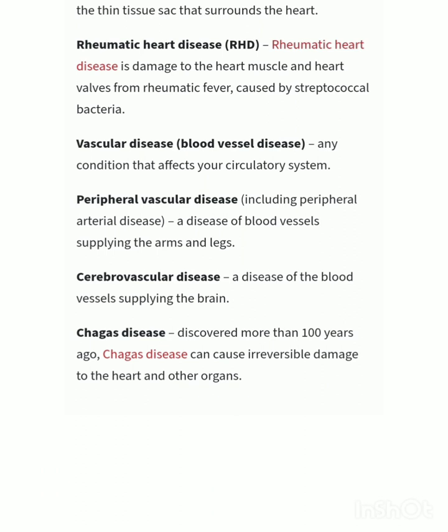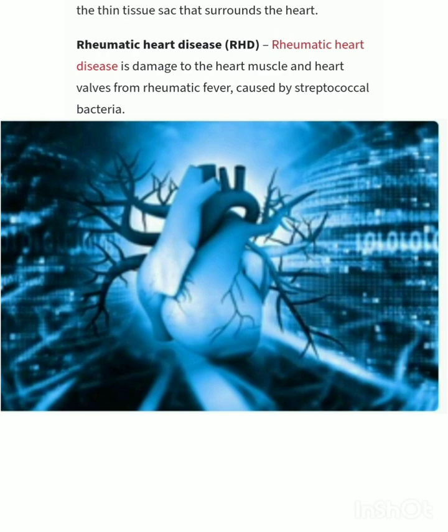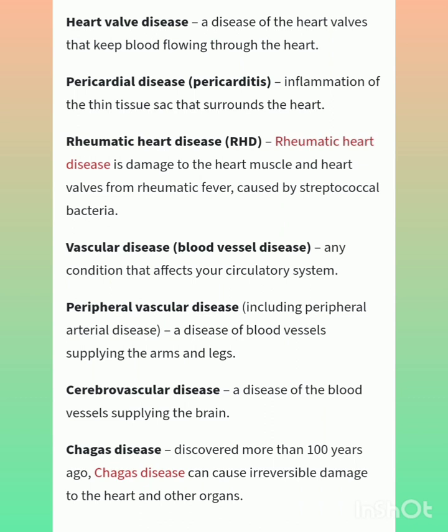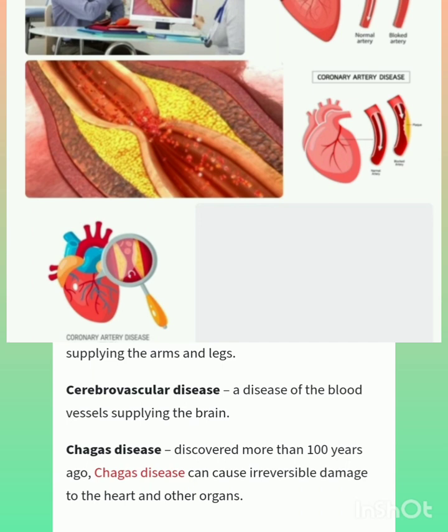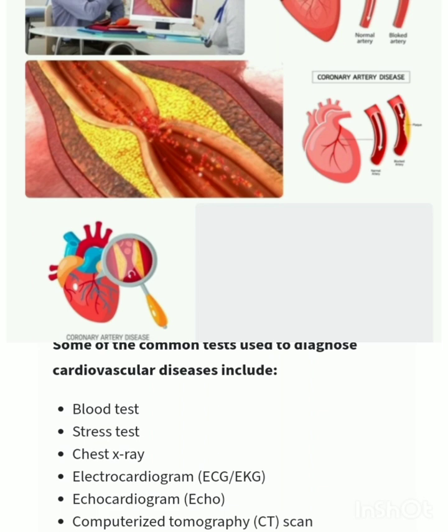Additional types include cardiomyopathy, congenital heart disease, deep vein thrombosis, heart failure, and heart valve disease — a disease of the heart valves that keeps blood flowing through the heart. Heart failure is when your heart isn't pumping blood properly. Pericarditis is inflammation of the thin tissue sac surrounding the heart. Rheumatic heart disease involves damage to the heart muscles and valves from rheumatic fever caused by streptococcal bacteria. Vascular diseases include peripheral vascular disease and cerebrovascular disease — diseases affecting blood vessels supplying the brain.